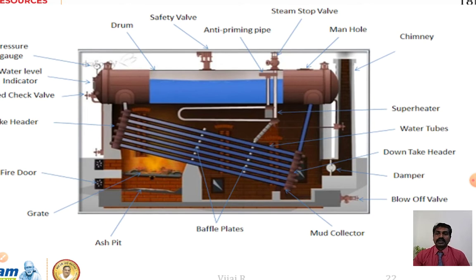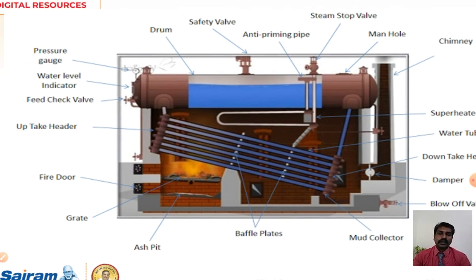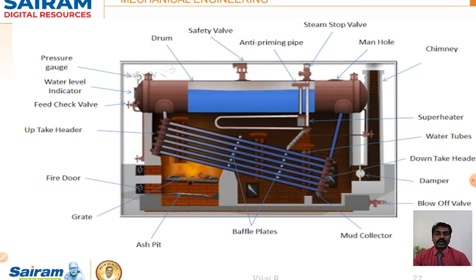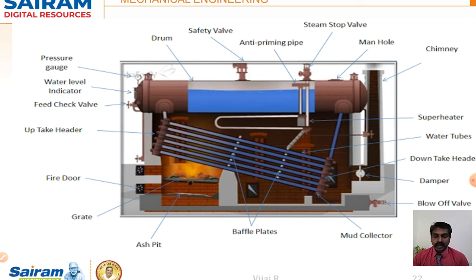You can see the construction of the Babcock and Wilcox boiler with a drum containing water. There are two important headers: the downtake header and the uptake header. Water comes downward from the drum on the right side of the downtake header — the blue color indicates the water. The water fills into the pipes based on the principle that hot water moves upward and cold water stays at the bottom.